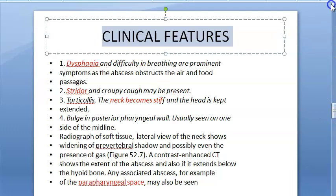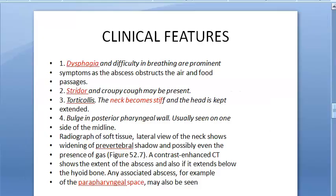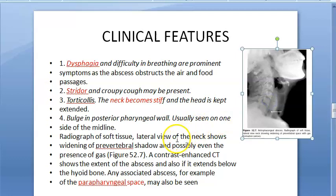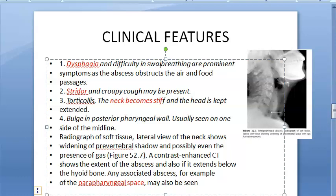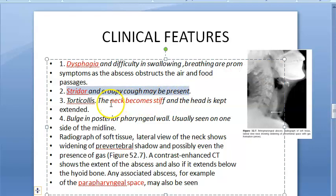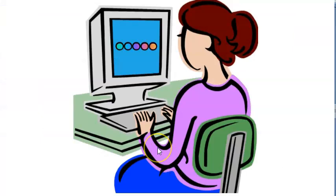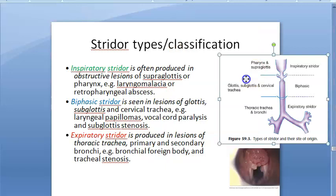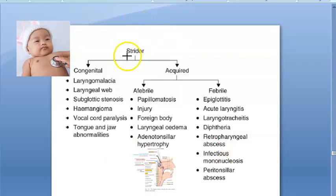The clinical features of retropharyngeal abscess include dysphagia — difficulty in swallowing — and difficulty breathing, as both the air and food passages are obstructed. Stridor can be present. Because this is a supraglottic lesion involving the pharynx, the stridor will be inspiratory stridor.